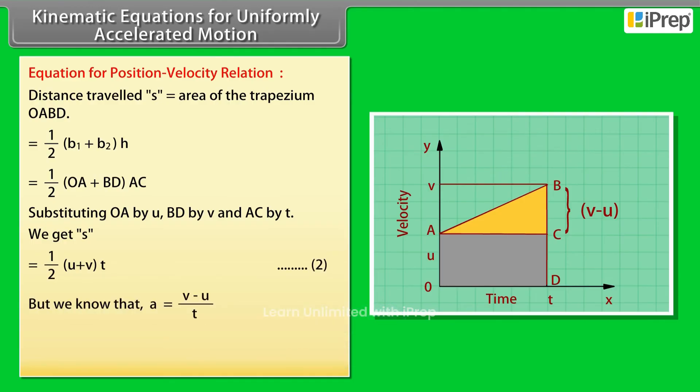But we know that A equals V minus U upon T, or T equals V minus U upon A. So, by substituting the value of T in the equation, we get V squared minus U squared equals 2AS.